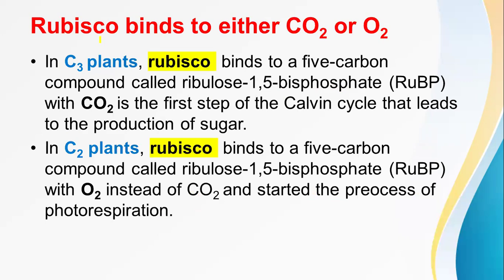Rubisco binds to either carbon dioxide or oxygen. In C3 plants, Rubisco binds to a 5-carbon compound called ribulose 1,5-bisphosphate with carbon dioxide — this is the first step of the Calvin cycle that leads to the production of sugar. In C3 plants, Rubisco is normally fixed by carbon dioxide and the normal Calvin cycle will proceed.